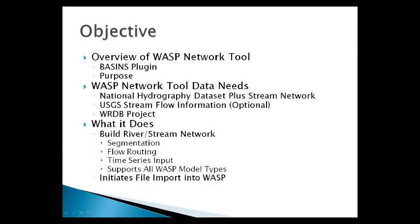The WASP Network Tool is a plug-in to EPA's Basins Geographical Information System Tool. The purpose of this tool is to build networks or model segmentations for rivers and streams in the United States. The WASP Network Tool requires a coverage from the National Hydrography Dataset Plus Stream Network, with optional capabilities to bring in stream flows from USGS gauges and WRDB projects built using Basins.